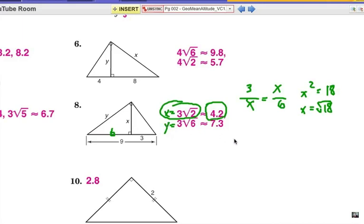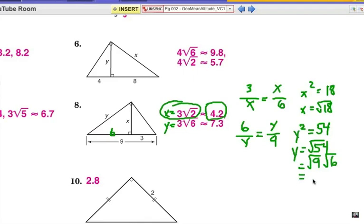And likewise, Y, again, is the geometric mean between the near part of the hypotenuse, which is the 6, and the entire hypotenuse, which is the 9. So, cross-multiply, Y squared equals 54. And take the square root of each side. So, Y would be the square root of 54, which is the square root of 9 times the square root of 6. And therefore, simplified, it's going to be 3 radical 6. And yes, I already had that showing. So, I hope that you were able to work that out as an approximate decimal 7.3.